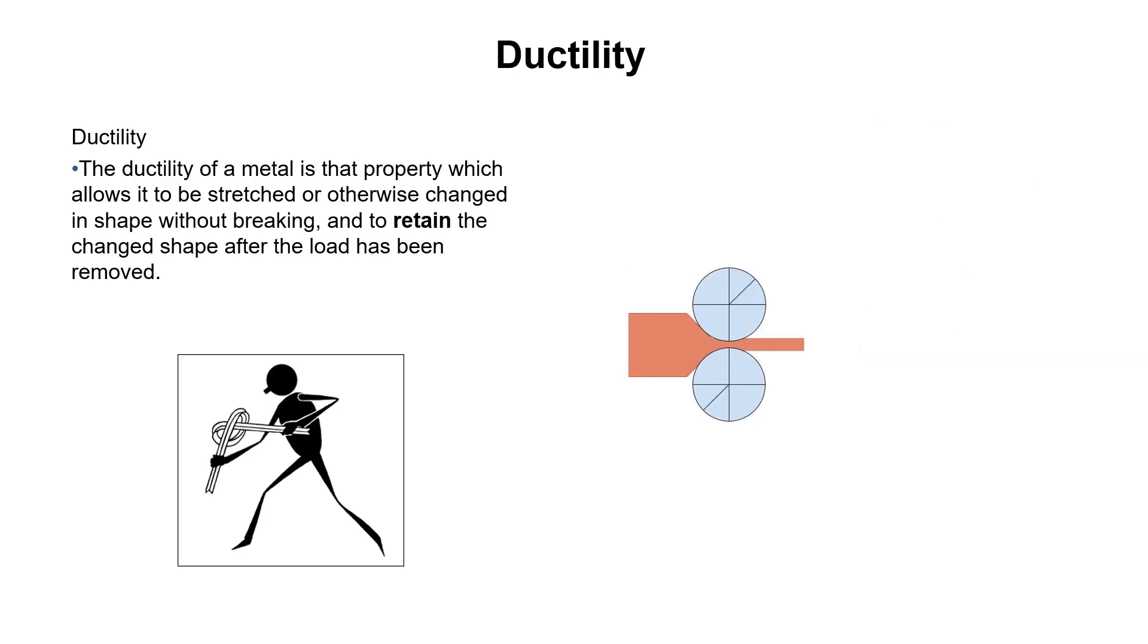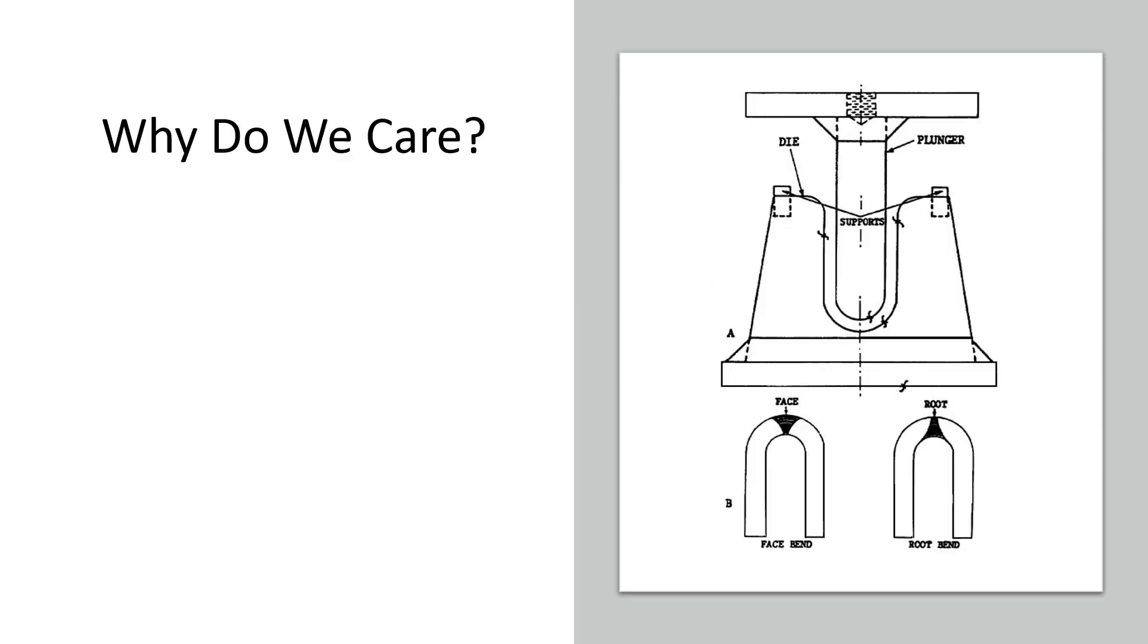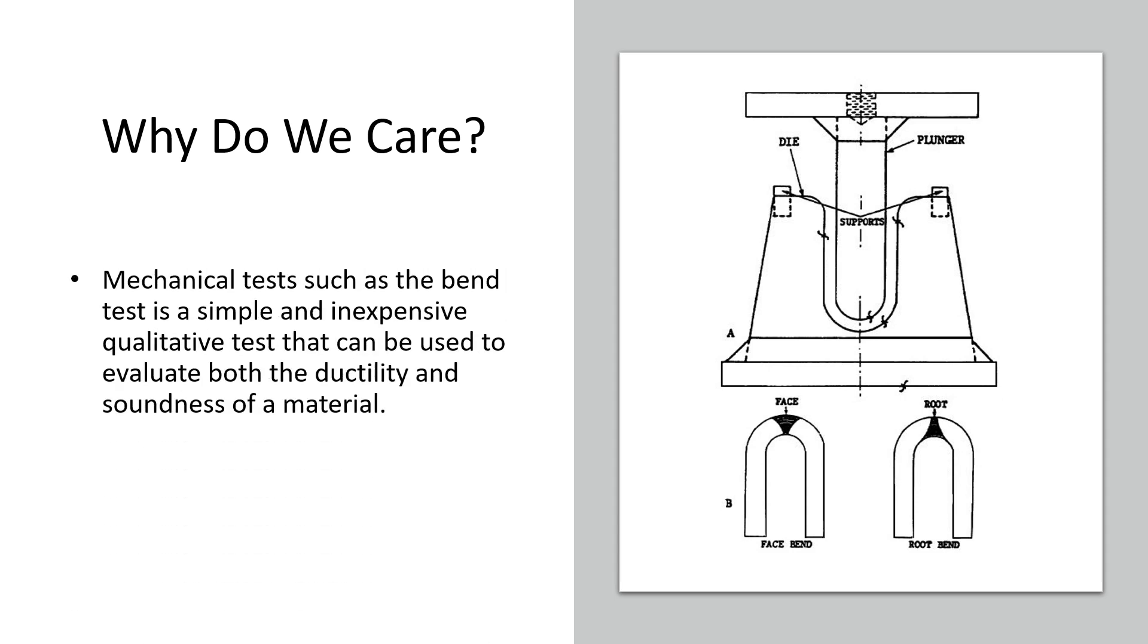Ductility is the ability of a material to change its shape without breaking, to retain the changed shape after the load has been removed. It's what allows copper or steel to be turned into wire or nails or rolled out into plate.